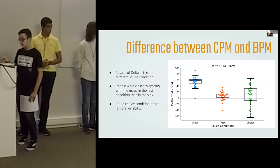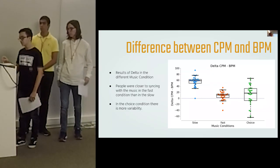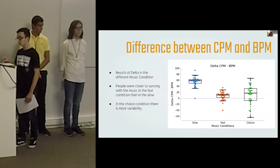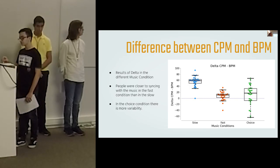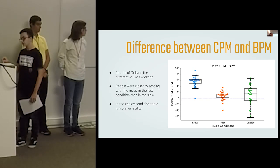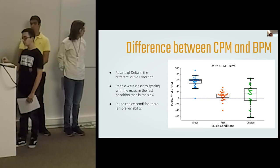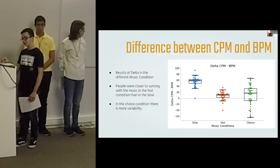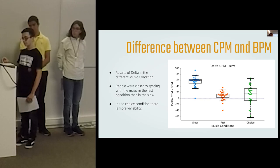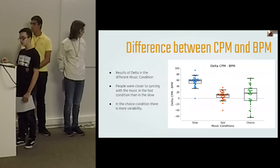This is the second graphic. In this graphic, we can see the correlation between the music condition and the delta, which is the subtraction of the CPM with the beats per minute, or BPM for short. This will show us how close the person was to syncing with the music. We can also see that in slow music, people are way faster than the BPM of the music, but in the faster track, the CPM and the BPM are very similar. This may be caused by people maintaining the CPM of the trial without music. In the choice condition, there is more variability because the beat in the chosen music may be irregular.